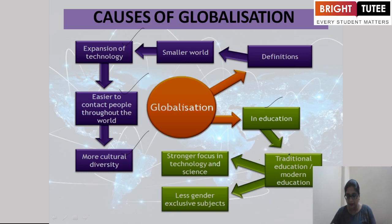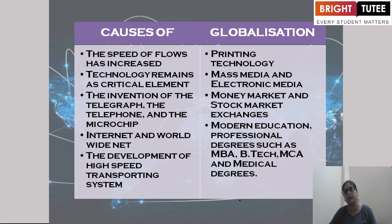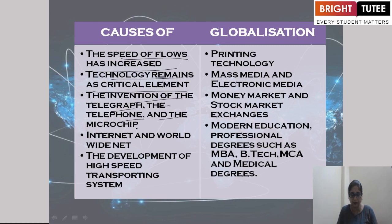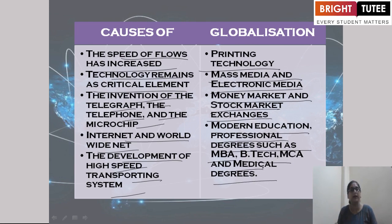In the field of education, traditional education and modern education are affected, with a stronger focus on technology and science, and in modern education, less gender-exclusive subjects. Globalization is caused by the speed of flows, and technology remains a critical element — invention of the telegraph, the telephone, the microchip, the internet, and the world wide web. Also: development of high-speed transporting systems, printing technology, mass media and electronic media, money market and stock market exchanges, modern education, and professional degrees such as MBA, BTech, NCA and medical degrees.